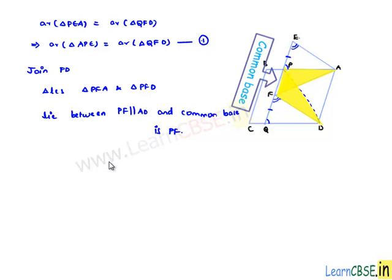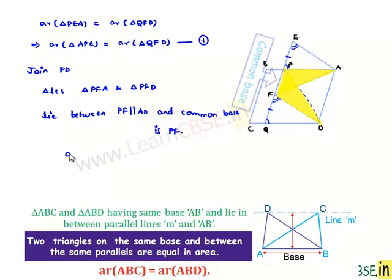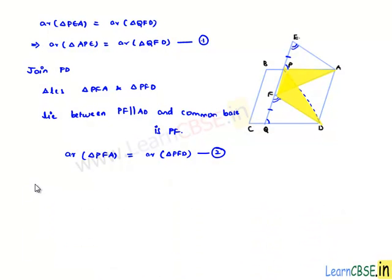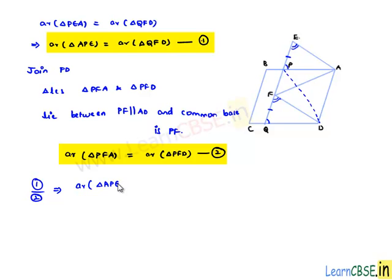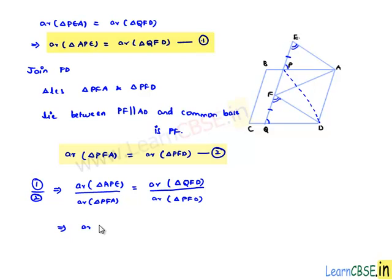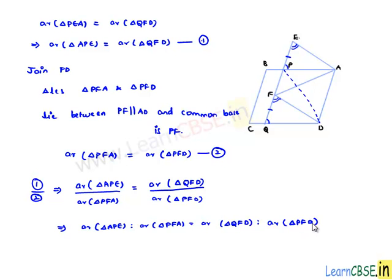We know that two triangles lying between two parallel lines with a common base will have equal areas. Therefore, area of triangle PFA is equal to area of triangle PFD — let this be equation number 2. Dividing equation 1 by equation 2, we get area of triangle APE to area of triangle PFA is equal to area of triangle QFD to area of triangle PFD. This is the second proof.